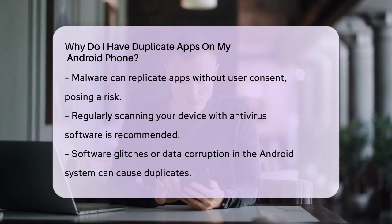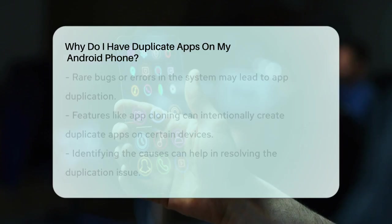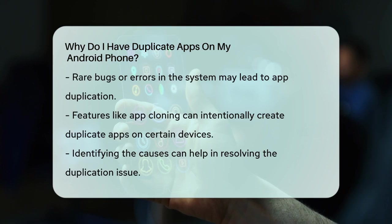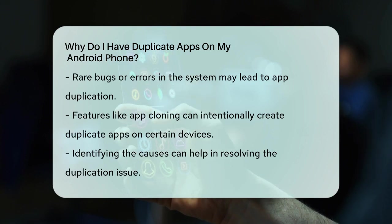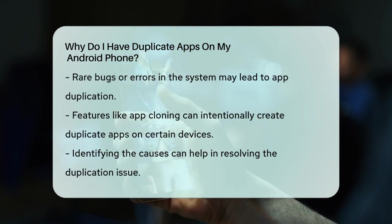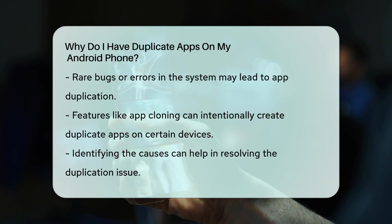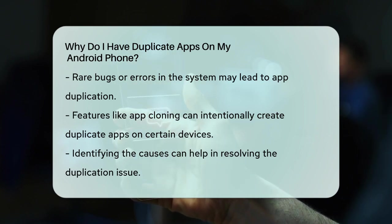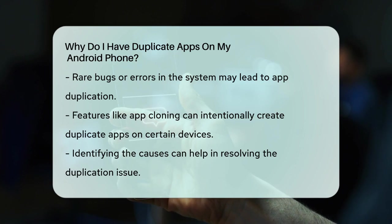Software glitches or data corruption within the Android system can also lead to app duplication. These are rare instances, but they can happen due to bugs or errors in the system. Lastly, if you're using a feature like app cloning, which some devices offer, it might be turned on for certain apps, causing duplicates.